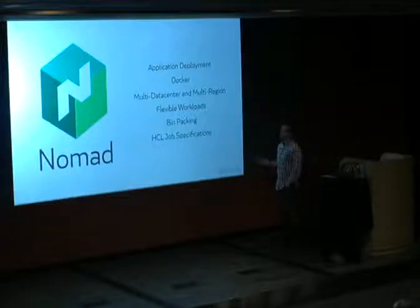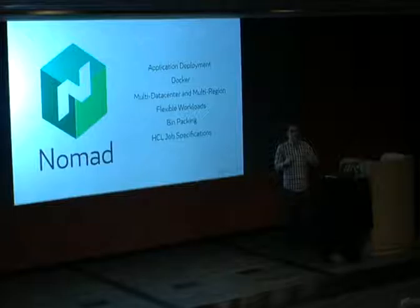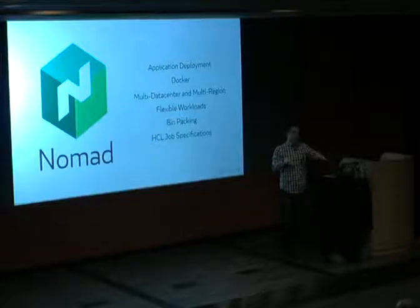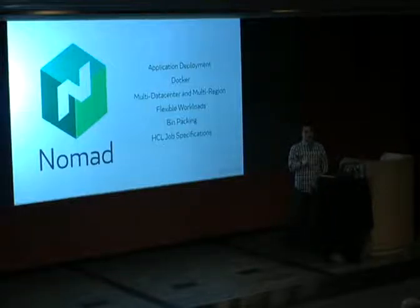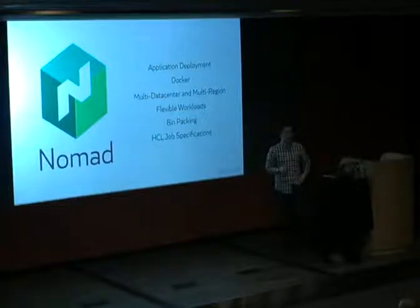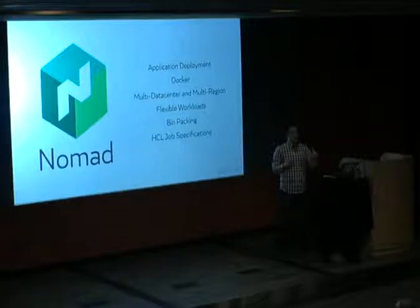Feature-wise, Nomad puts Docker as a first-class citizen, making productionizing Docker a lot easier — which seems to be a real problem. It supports multi-data center and multi-region out of the box, which is unique. You can separate regions — for example, separating us-east-1a, 1b, and 1c at the scheduler level — so a job can run across both east and west coast data centers, or only in the east coast across two availability zones.